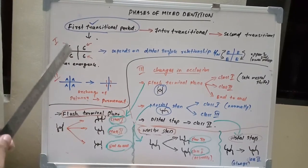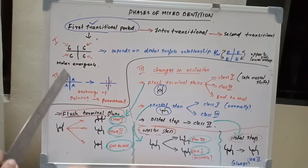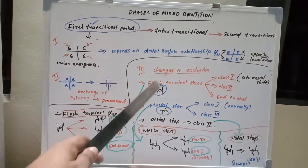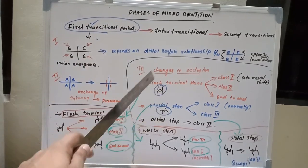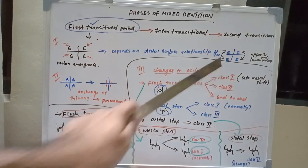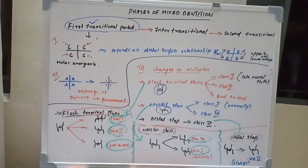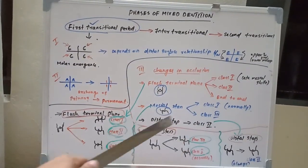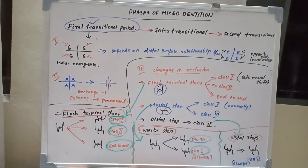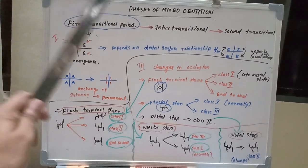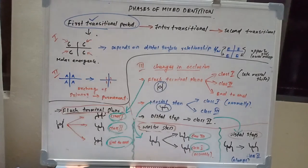To recap the first transitional period: there is emergence of first permanent molars, replacement of deciduous central incisors with permanent incisors, and changes in occlusion. Flush terminal plane leads to Class I, Class II, or end-to-end relationship using the late mesial shift. Mesial step leads most commonly to Class I, and distal step always gives Class II molar relationship in permanent teeth. The inter-transitional and second transitional phases will be covered in the next video.